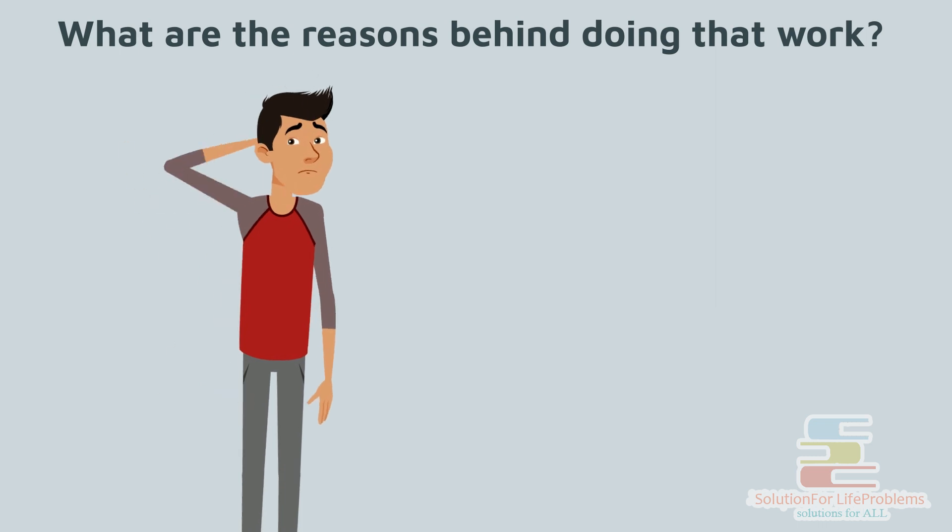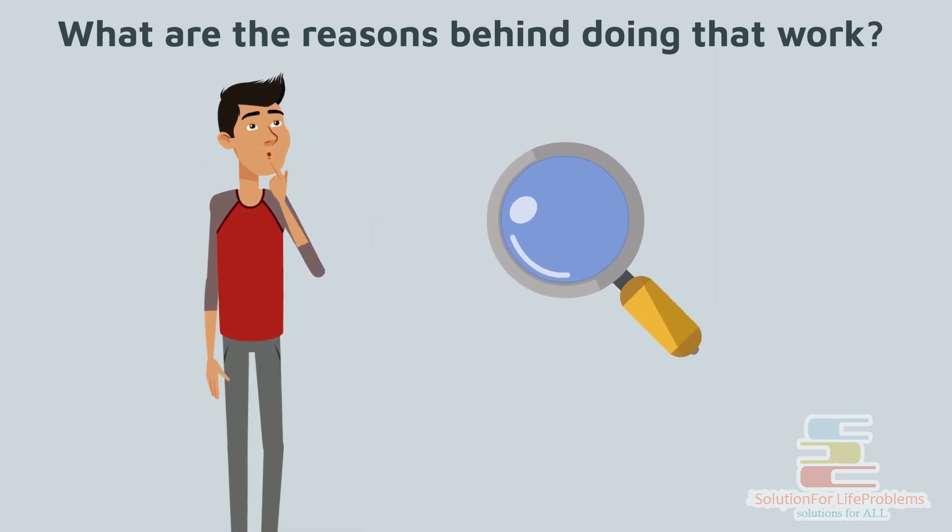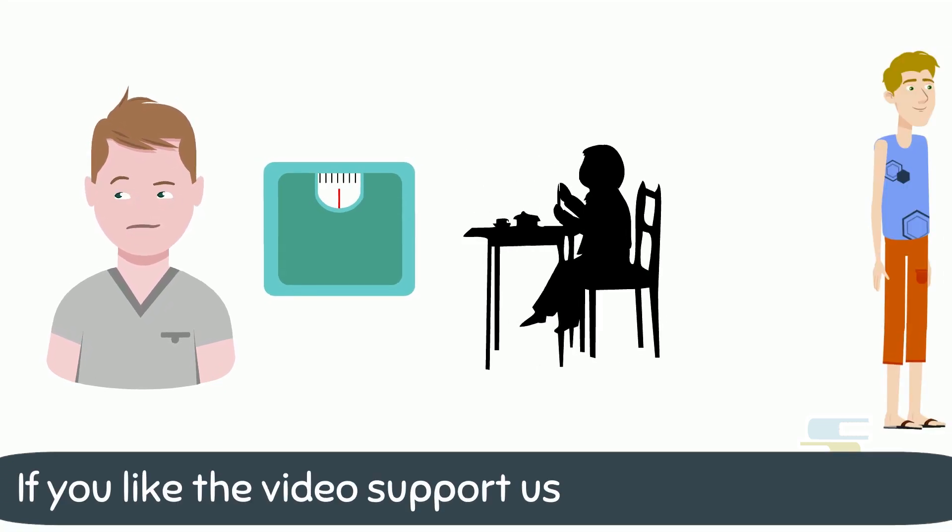Now the second step is where or what to focus on. It means you have to choose only one place where you have to put all of your focus. For example, if you are thinking of weight loss, then you have to choose whether to concentrate on eating or exercising.